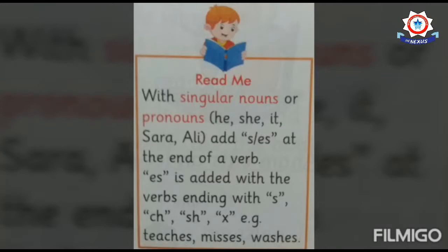ES is added with verbs ending with S, CH, SH, or X. You have to add S or ES in the verb for singular nouns and pronouns. All verbs ending with SH, CH, S, or X will get ES, while all other verbs will get S.